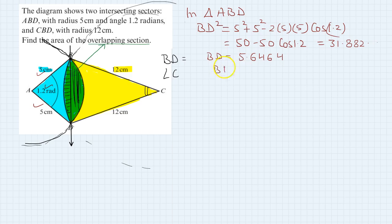So BD equals 5.65. Now it's easy to calculate this angle. Now in triangle BCD...